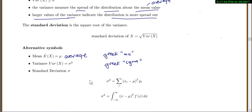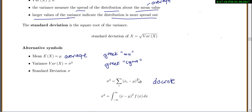There are some formulas you can use for the variance. If you have a discrete random variable, you use the summation formula: take each x value minus the mean, squared, times each probability. If it's continuous, you use the integral instead: it'll be x minus the average, squared, times the PDF.